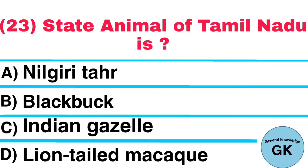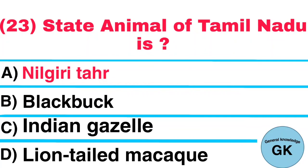Question Number 23. State Animal of Tamil Nadu is: A. Neilgiri Tahr, B. Black Buck, C. Indian Gazelle, D. Lion-Tailed Macaque. Answer: Neilgiri Tahr.